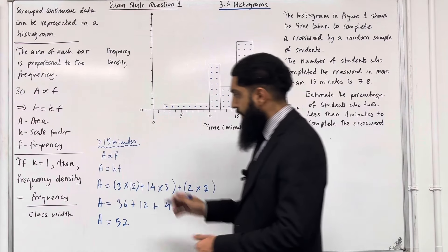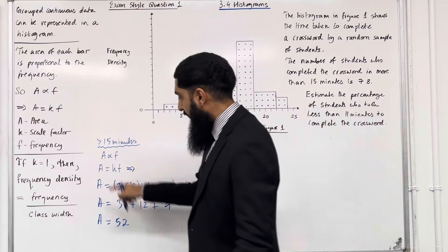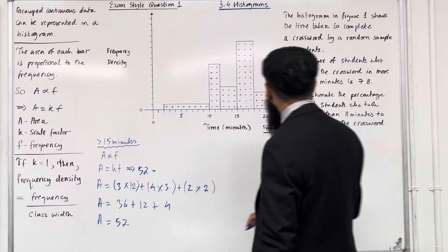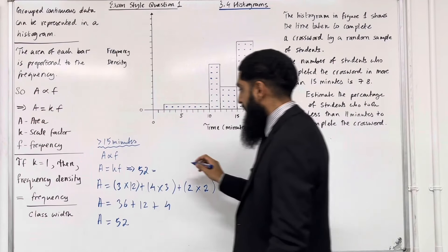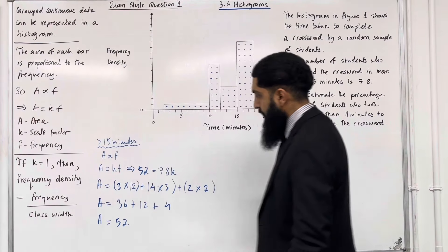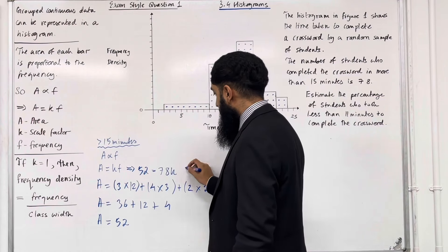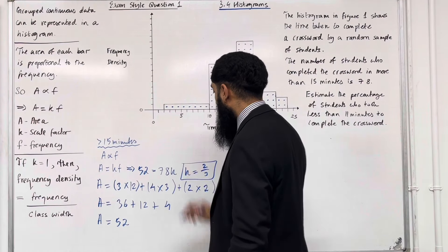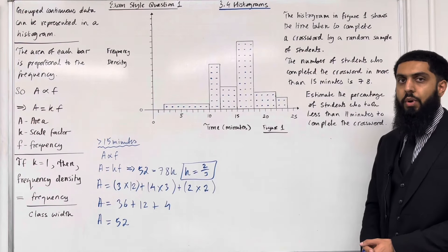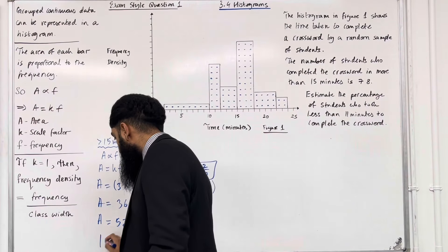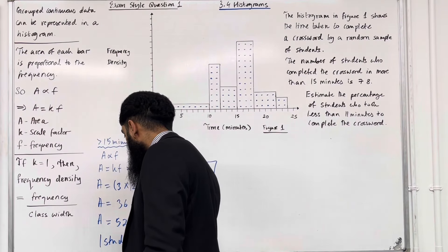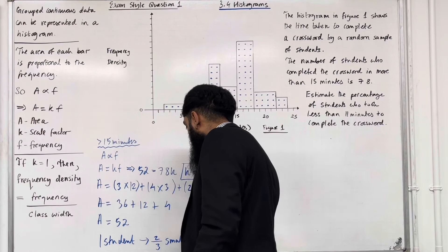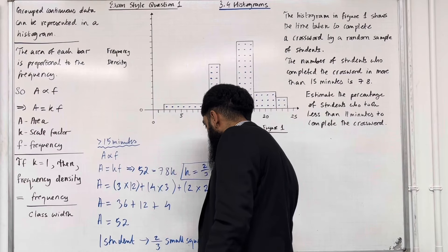We know that A is 52, so 52 equals K times the frequency, which is 78. Therefore K equals 52 divided by 78, which simplifies to 2 over 3. So our scale factor is K equals 2/3, meaning 1 student represents 2/3 small squares.